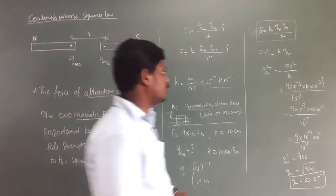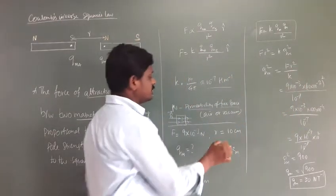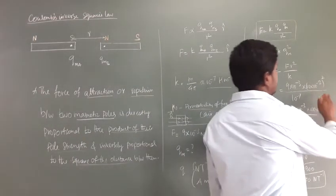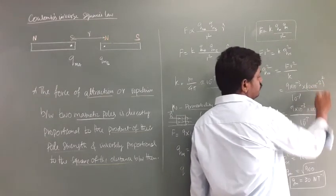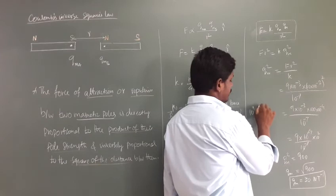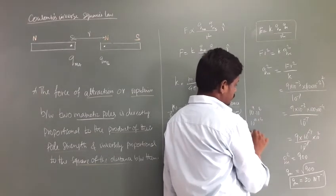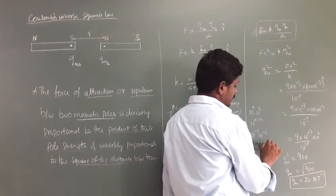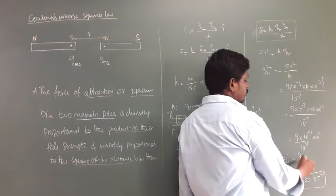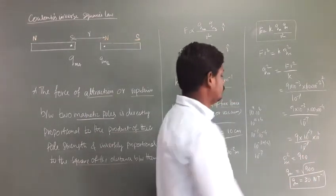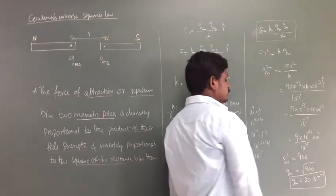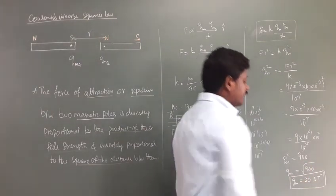Substituting: F = 9 × 10⁻³ Newton. The distance must be in meters, so 10 cm = 10 × 10⁻² m, giving R² = 100 × 10⁻⁴ = 10⁻² m². Then: 10⁻³ × 10⁻² gives 10⁻⁵, and dividing by K = 10⁻⁷ gives 9 × 10² = 900. So QM² = 900. Taking the square root: QM = 30, since 30 × 30 = 900. Therefore QM = 30 Newton per Tesla.